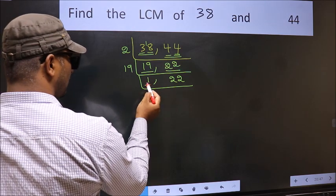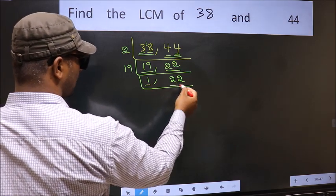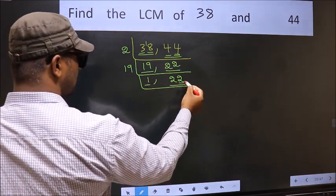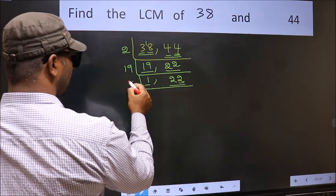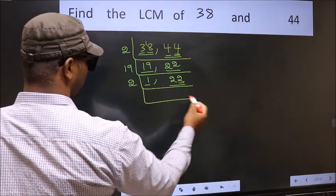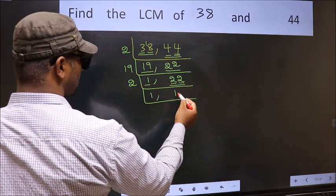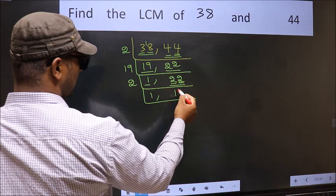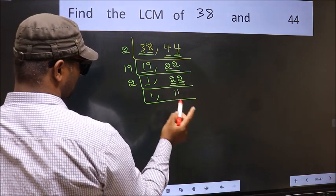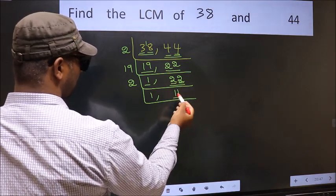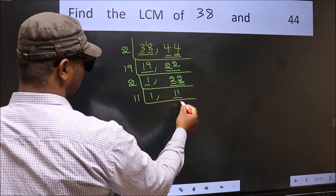Now we got 1 here, so focus on the other number 22. Last digit 2 is even, so take 2. First number 2, when do we get 2 in 2 table? 2 times 1 is 2. The other number 2, when do we get 2 in 2 table? 2 times 1 is 2. Now here we have 11. 11 is a prime number, so 11 times 1 is 11.